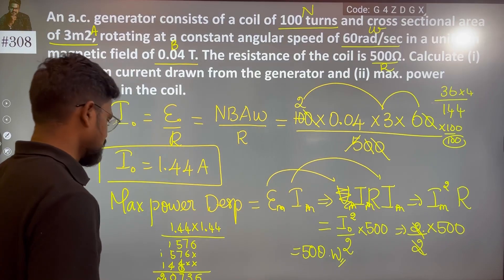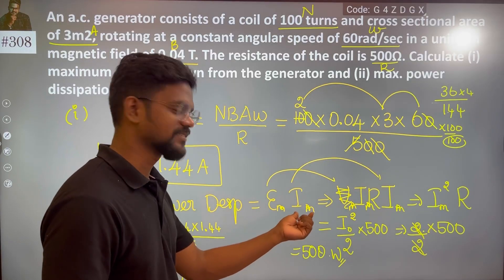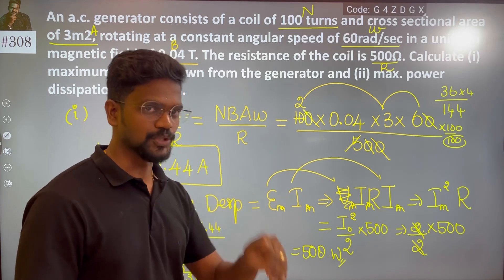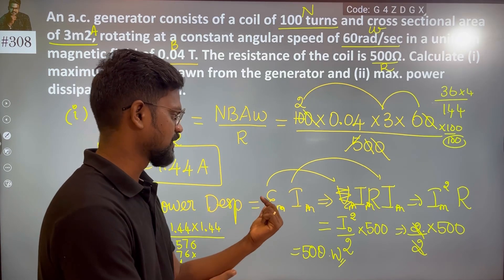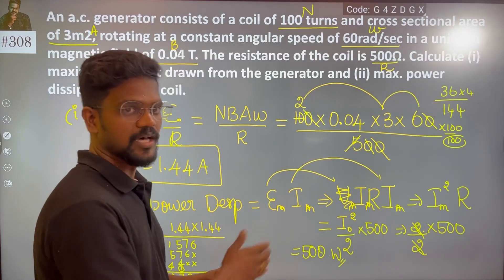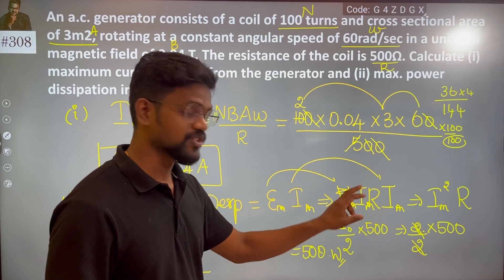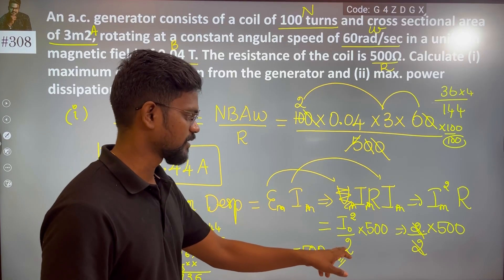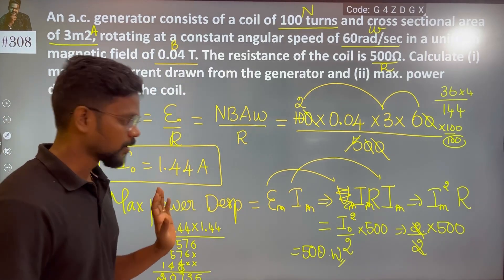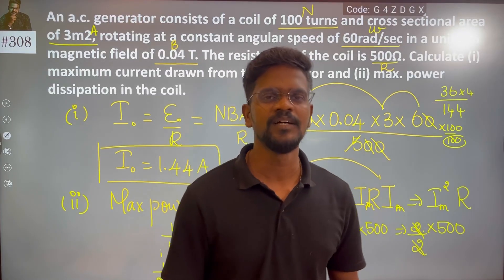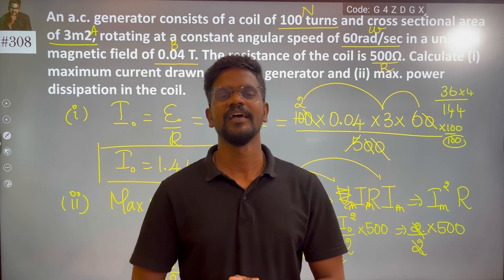So this is the solution. To summarize: maximum EMF, maximum current — V_rms is V₀ divided by root 2, I_rms is I₀ divided by root 2. And V₀ equals I₀ times R, so I₀ squared divided by 2 times R is the maximum power dissipation calculation. If you are confused, take your time to realize what is happening. Thank you.